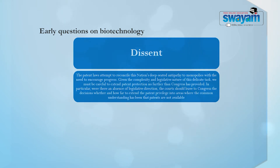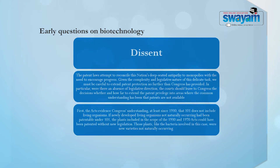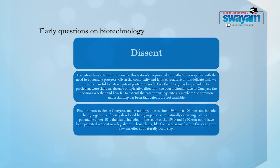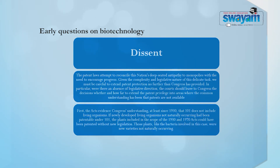The court also further went on to record its dissent by stating: first, the act's evidence that Congress understood that at least in 1930, section 101 does not include living organisms. If newly developed living organisms, non-naturally occurring, had been patentable under 101, the plants included in the scope of the 1930 act and the 1970 act which provides plant patents could have been patented without new legislation. Those plants, like the bacteria involved in this case, were new varieties not naturally occurring. The dissent seems to stick on what should be the legislative or judicial interpretation of legislative intention from the perspective of patentable subject matter.